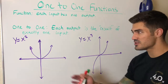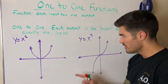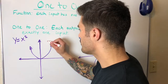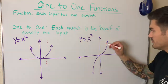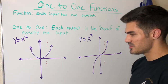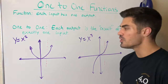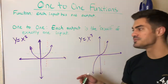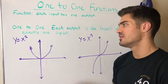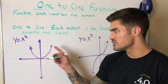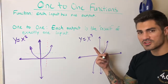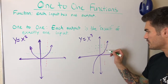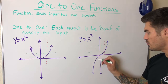Now let's look at the graphs of those examples. y = x² is not one-to-one; y = x³ is one-to-one. Both pass the vertical line test, confirming they are functions. To test one-to-one on a graph, we use the horizontal line test: if a horizontal line intersects the graph at two or more points, the function is not one-to-one. For a function to be one-to-one, every horizontal line must intersect the graph at only one point.